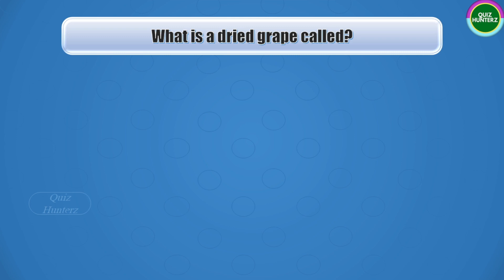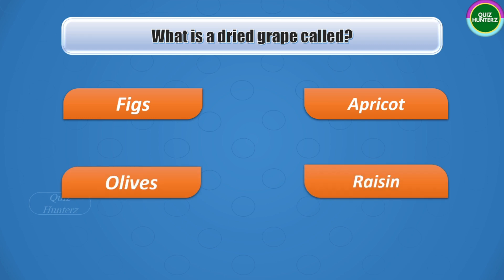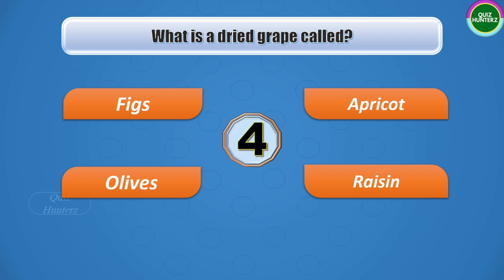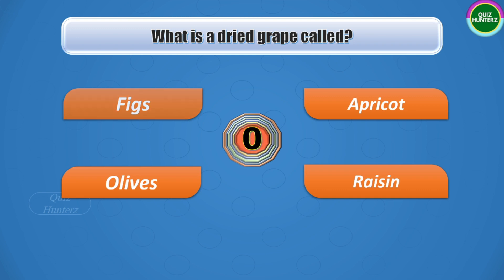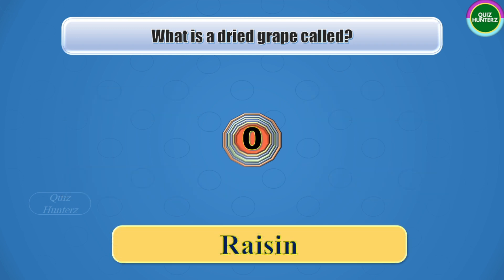Next question: what is a dried grape called? Options are figs, apricot, olives, or raisins. Your time starts now. And the correct answer is raisins.